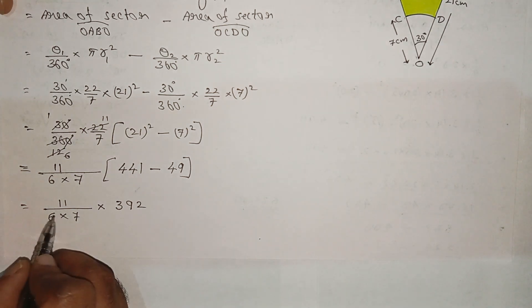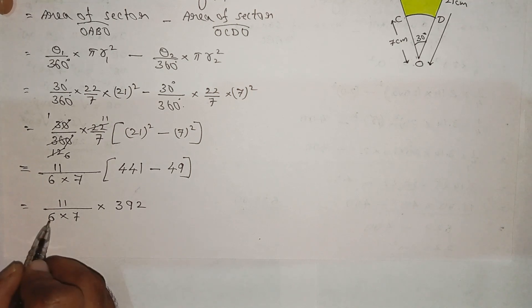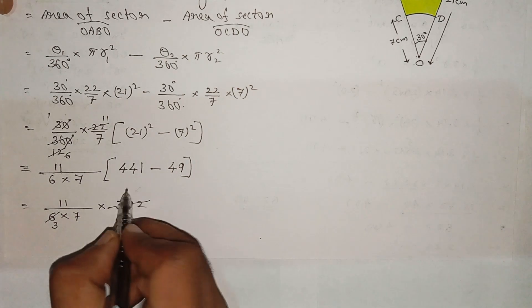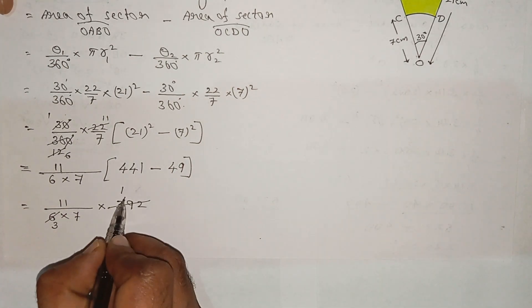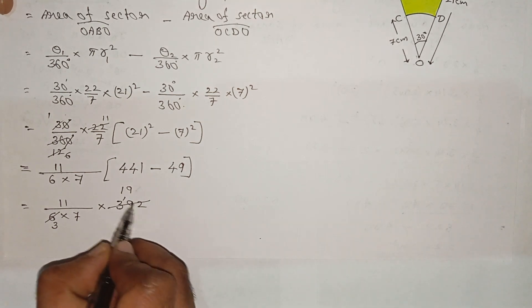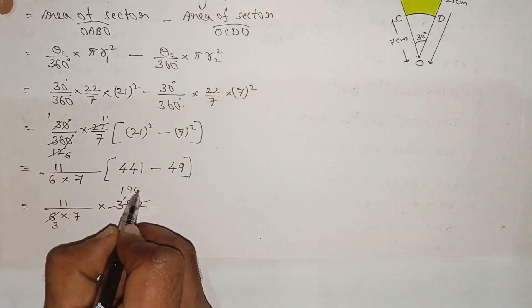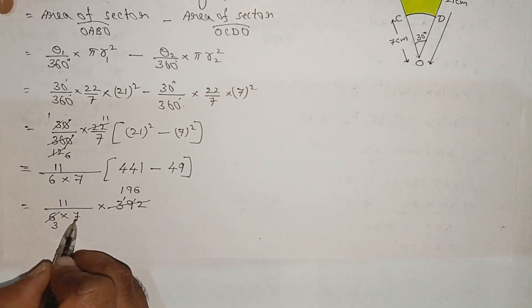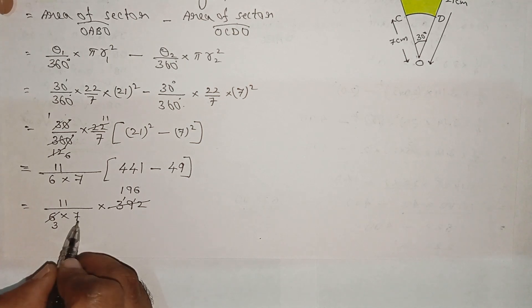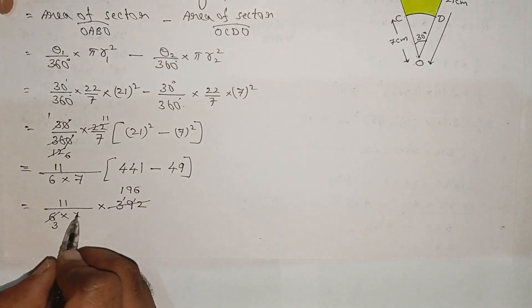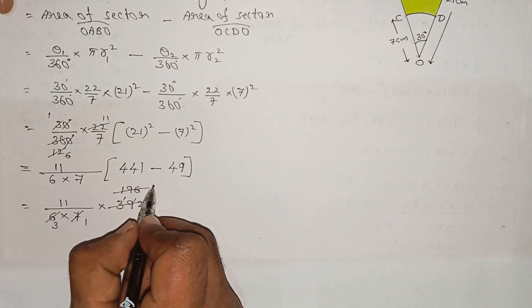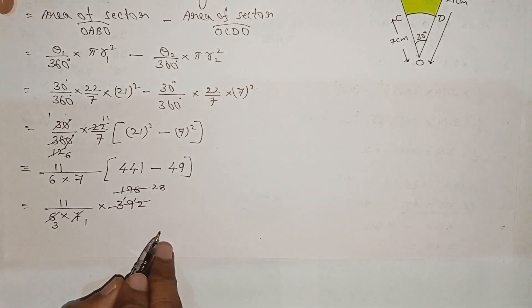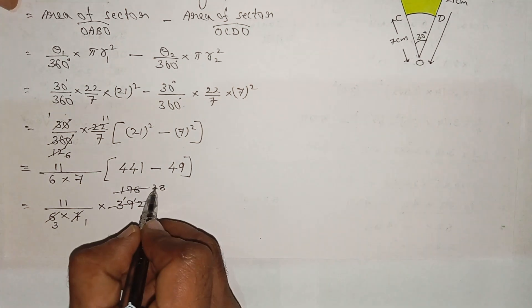Divide: divide by 2, divide by 2, divide by 2, divide by 7, divide by 7. Result: 28 divided by 14 gives us the final answer.